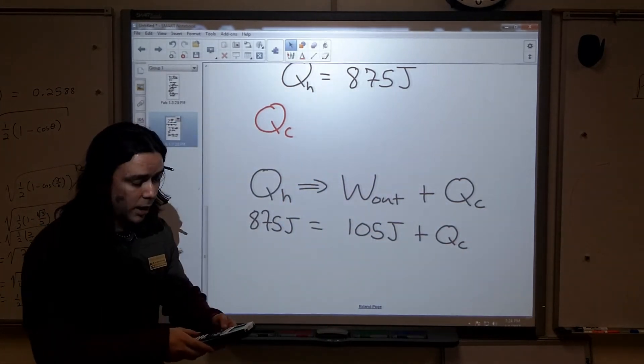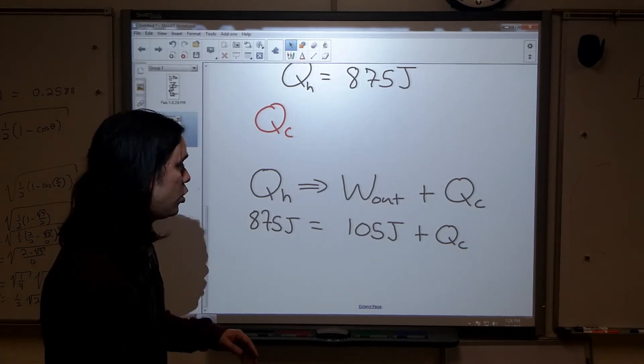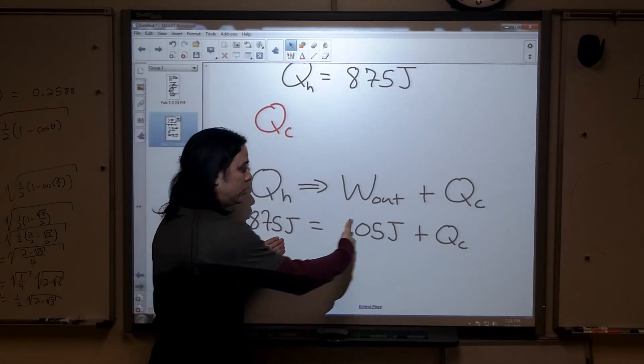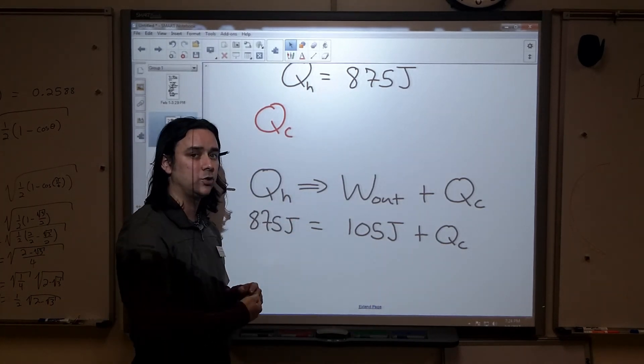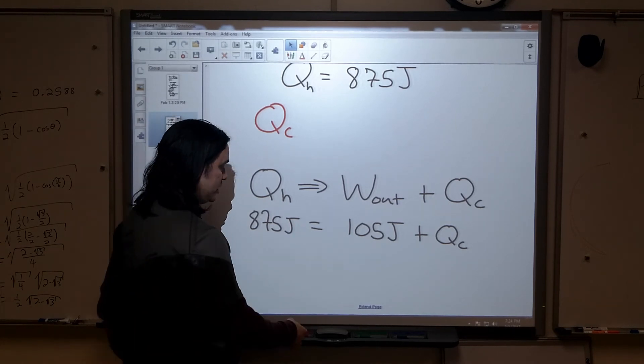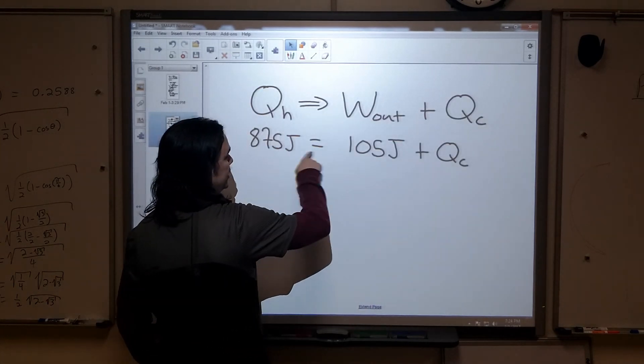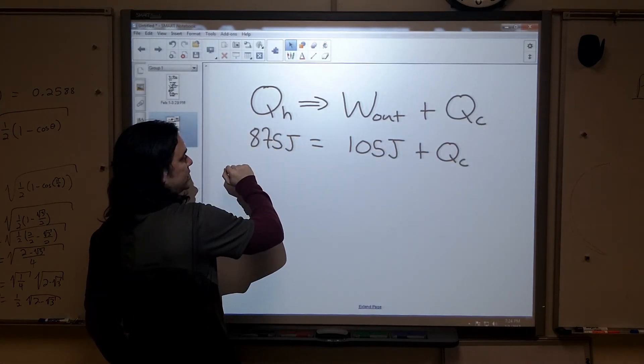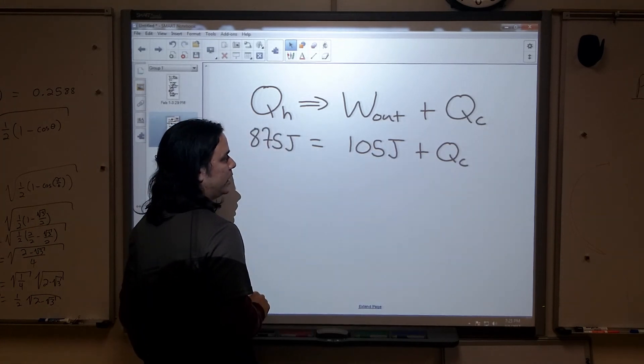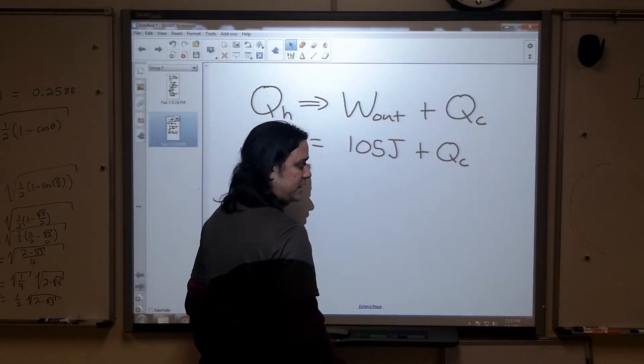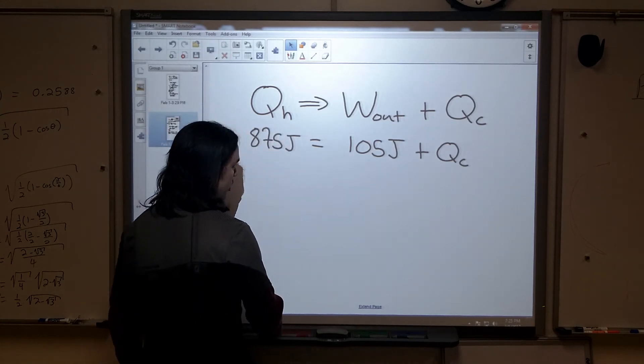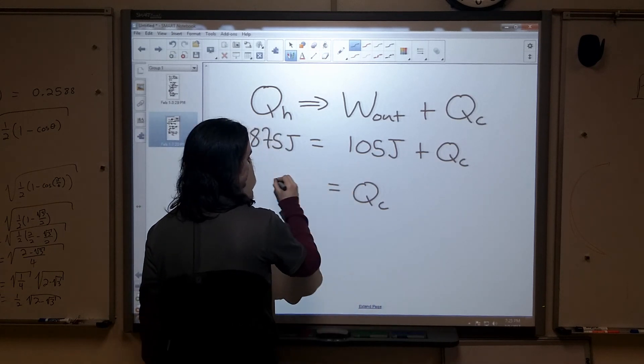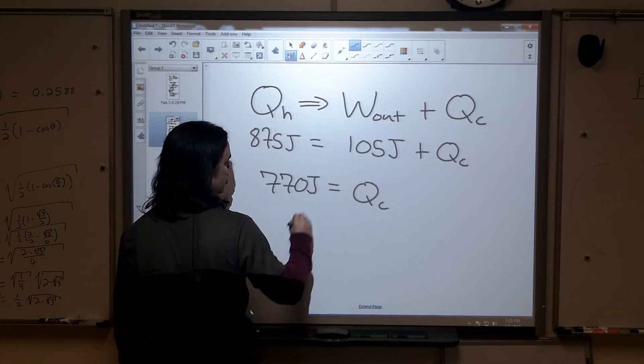This is conservation of energy. Now theoretically, it could be stored in the gas itself in our engine, but remember in one complete cycle, which is what we're looking at, the gas always comes back to where it started, which means it will have the same energy that it started with. So these are the only places that the energy can go in an engine. We're going to take in 875 joules, and if 105 of it went into work, whatever is left has to be rejected into the cold reservoir. So I subtract 105 from both sides, I'm going to find that Q_C comes up to 770 joules.